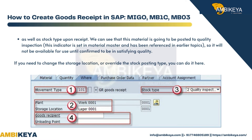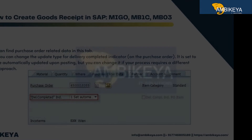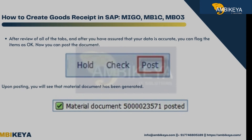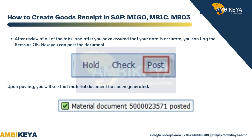Step 6: you can change the update type for the delivery completed indicator on the purchase order. It is set to be automatically updated upon posting, but you can change it if your process requires a different approach. After reviewing all tabs and confirming your data is accurate, you can flag the items as okay.